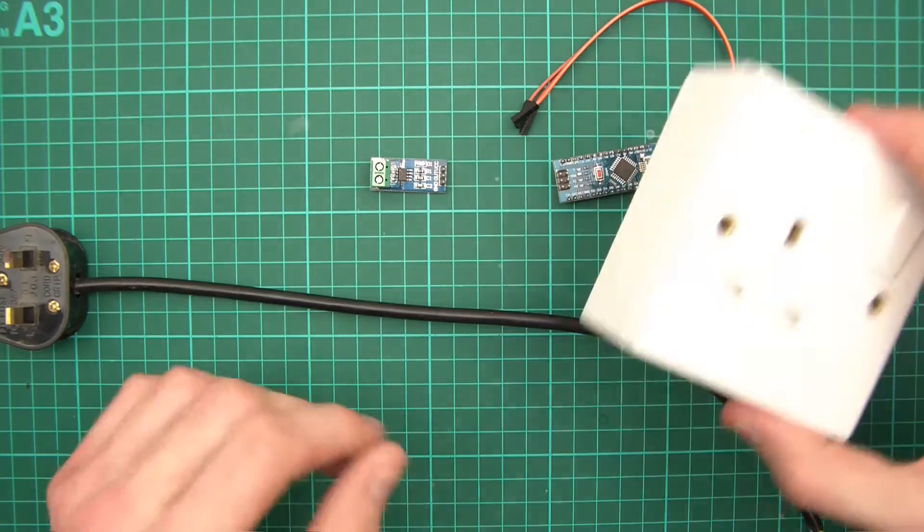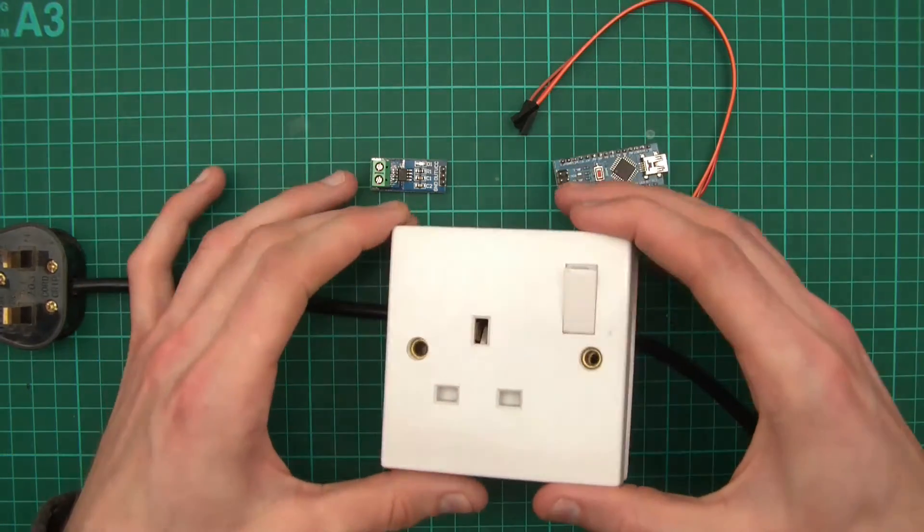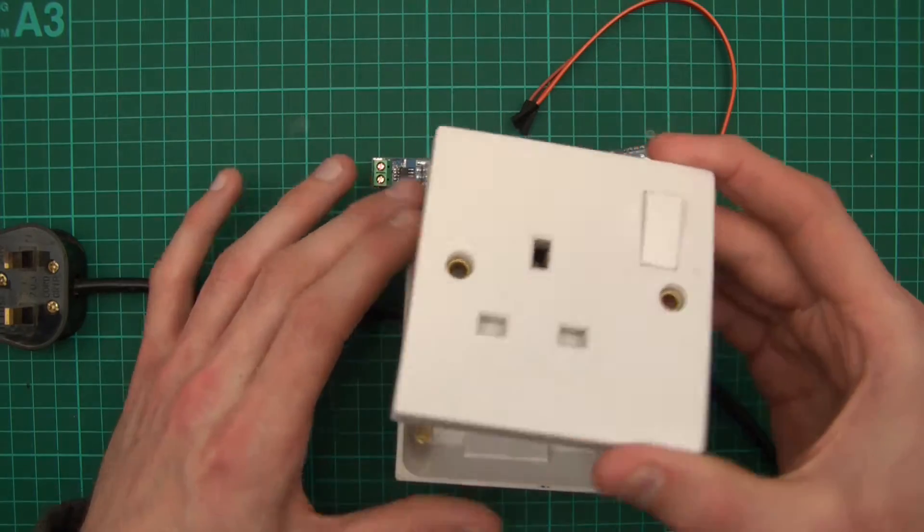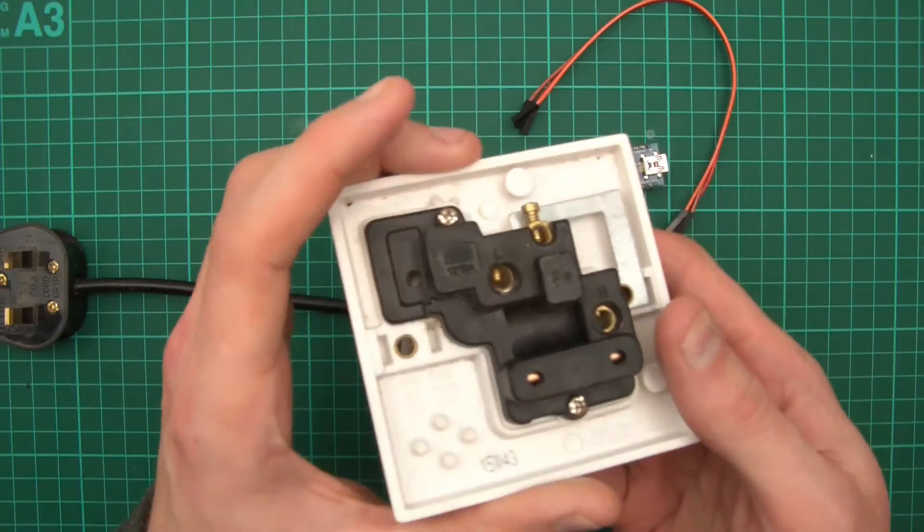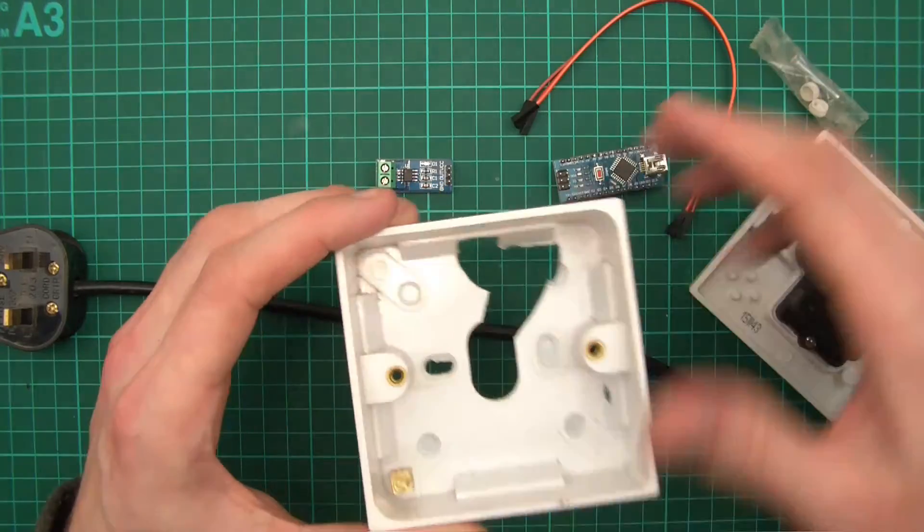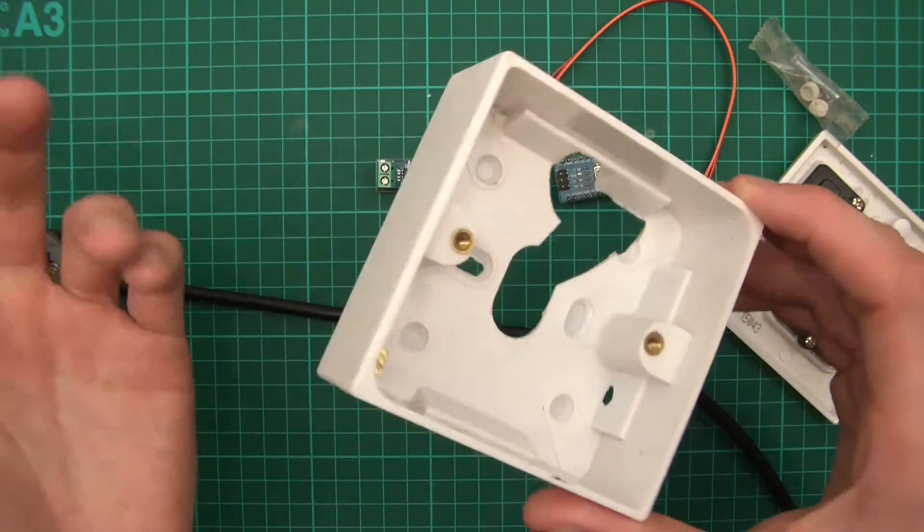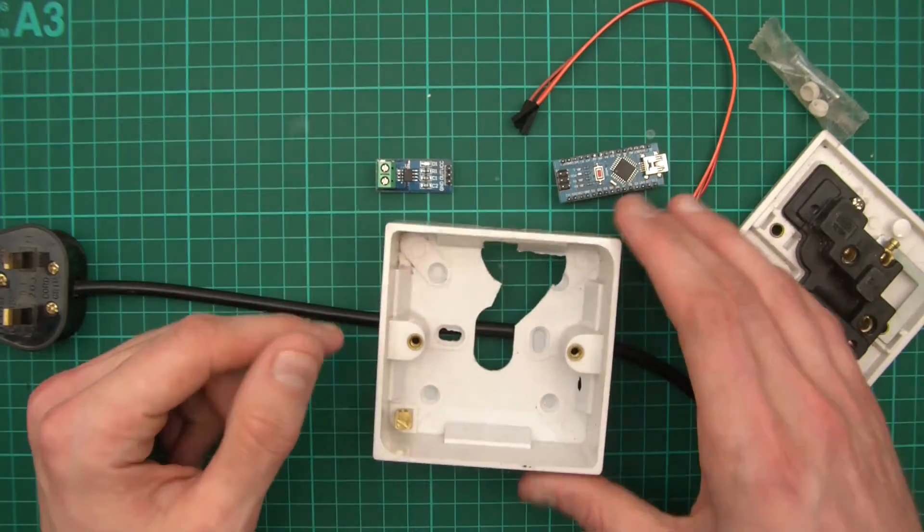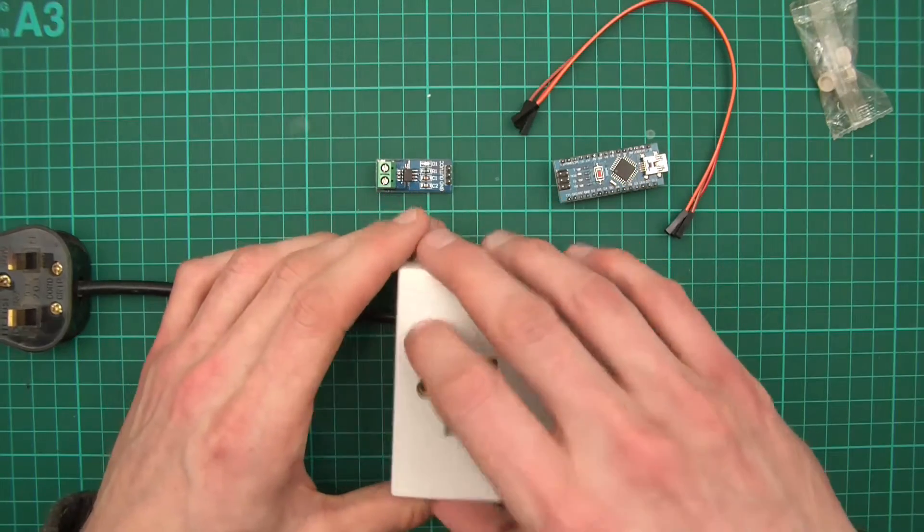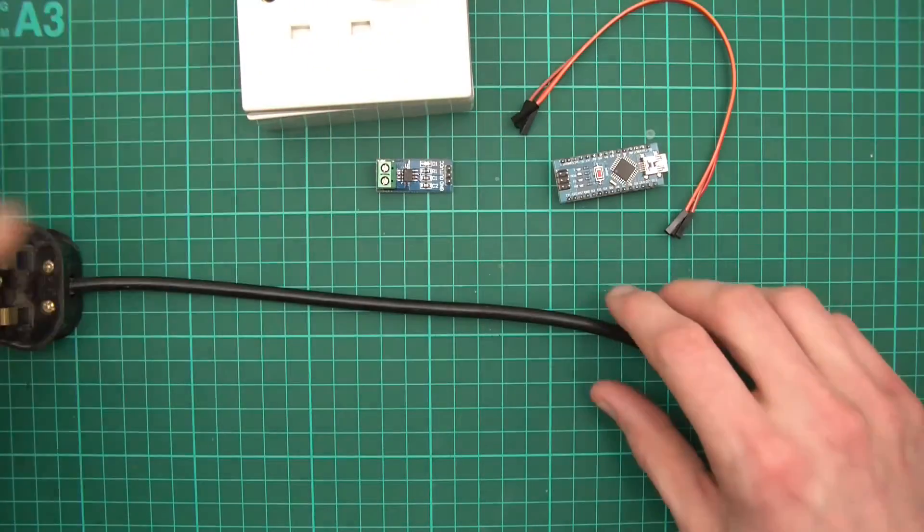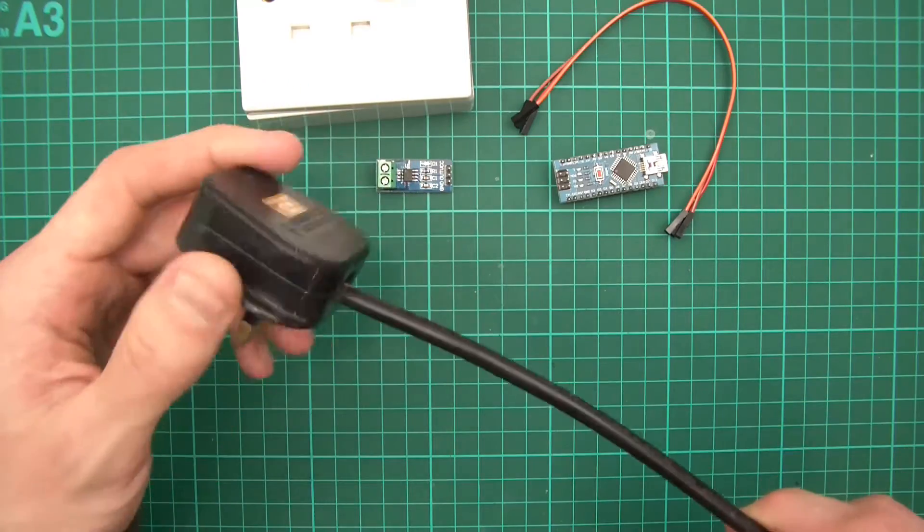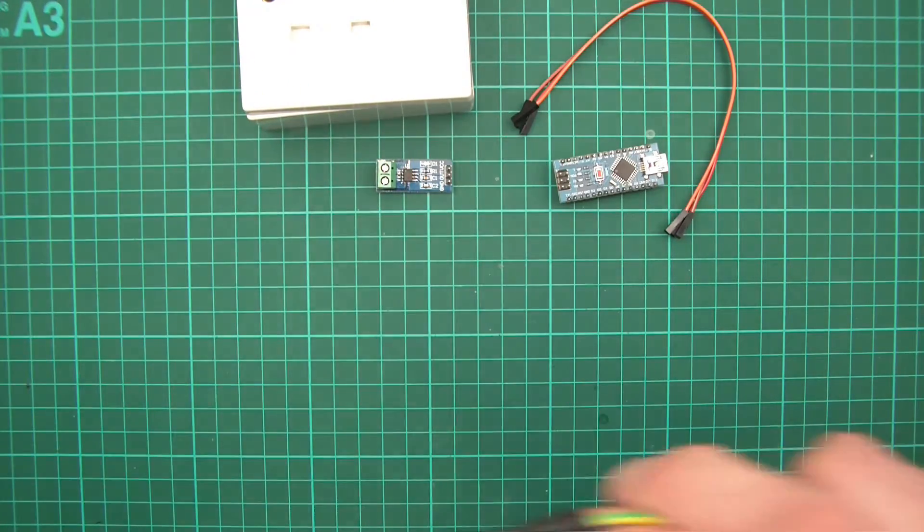I've also got some other bits. I've got this socket, a UK plug socket. I've got the screws that go with it and I've got a back plate or whatever it's called, I don't know what it's called but that's what I've got. I've also got a UK plug. It's fused as they all are, really.